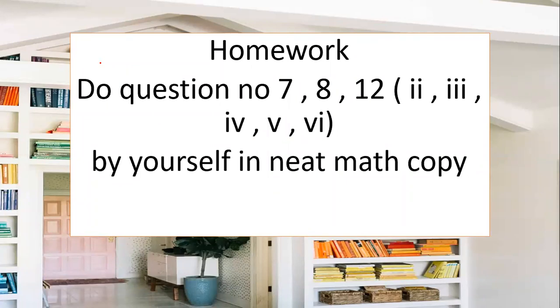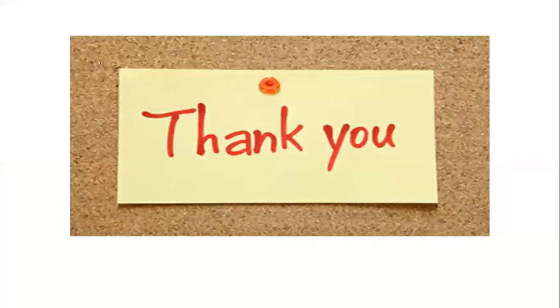Your homework is to do questions number 7 and 8 — draw the fact family and array from the 4 times table. Then complete question number 12, parts two, three, four, five, and six by yourself using your copy. All the questions are provided — you just need to note and solve them. This is all about today's lecture. If you have any difficulty or query, you may ask in the comment section.